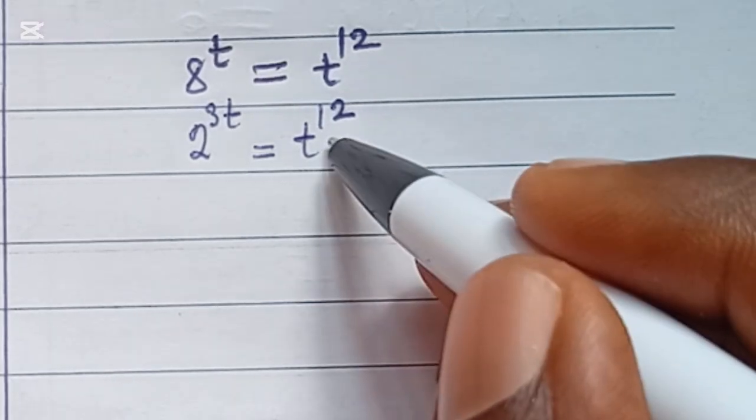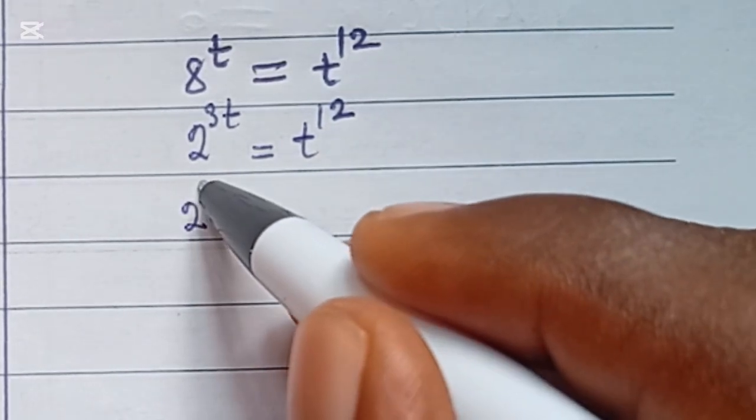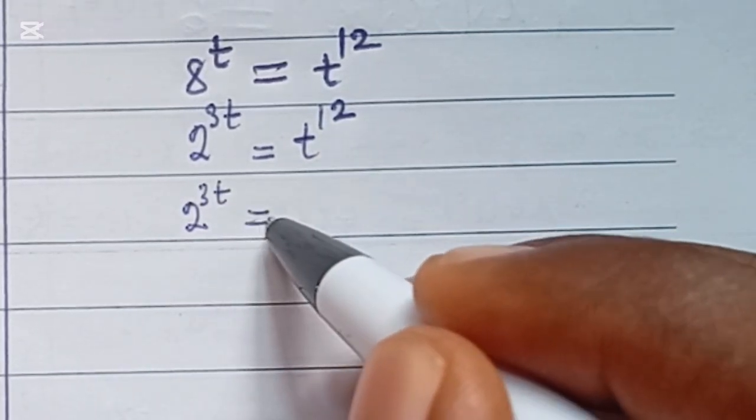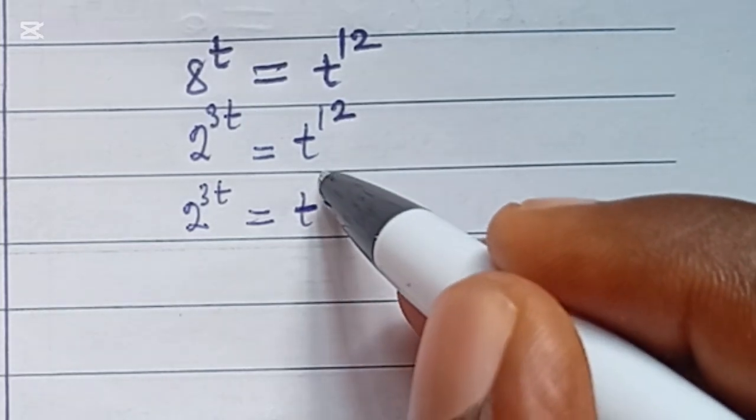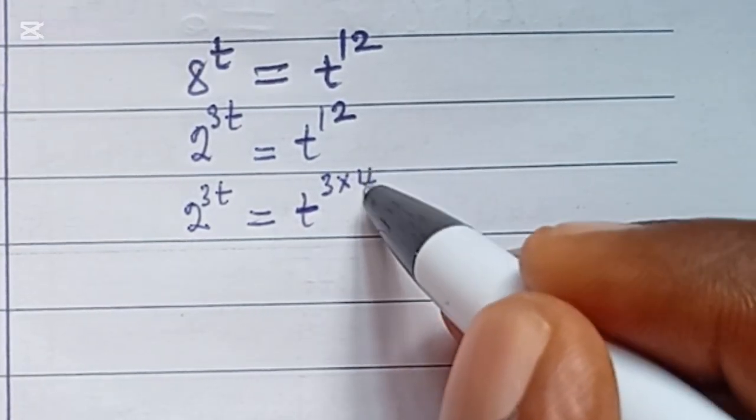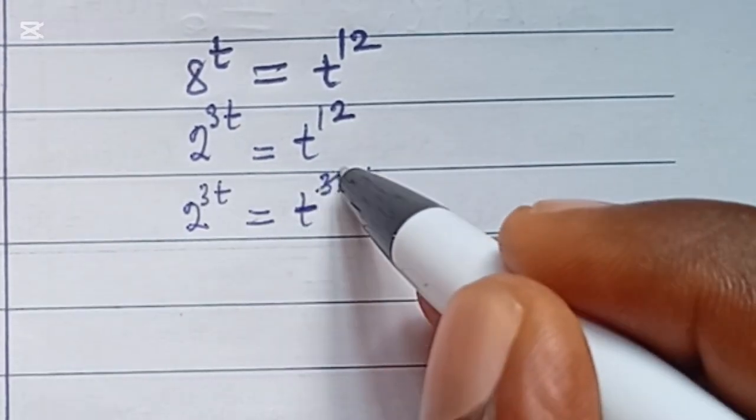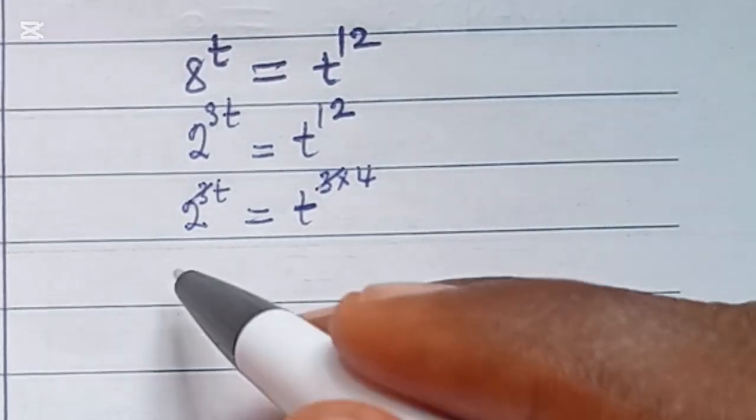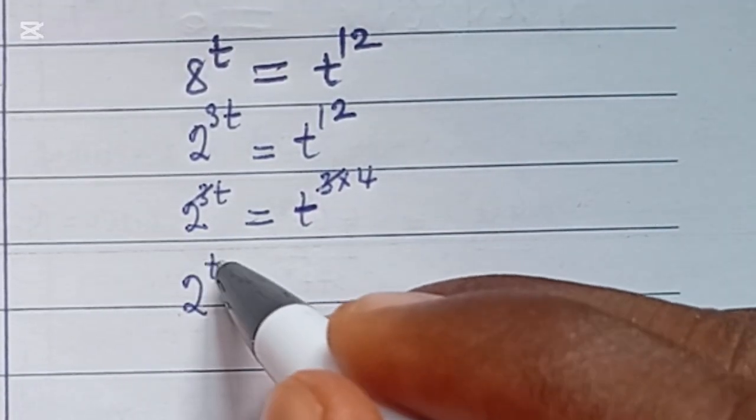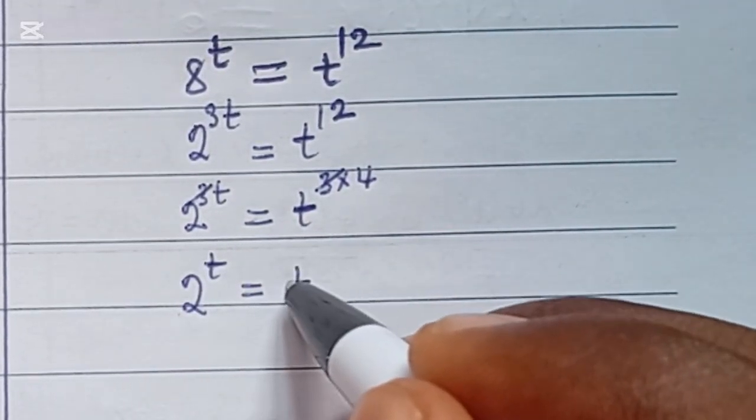So what you want to do in this case, you can rewrite this equation as 2 to the power of 3t. On the right-hand side, you can also write 12 as 3 times 4. We can actually reduce this equation by canceling out 3 from both powers. And we are left with 2 to the power of t is equal to t to the power of 4.